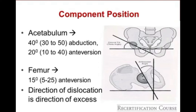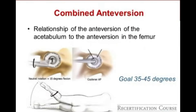The direction of dislocation is the direction of excess. If a hip dislocates out the front, that patient likely has excessive combined anteversion. Combined anteversion is an important concept — it's about the relationship between anteversion of the acetabulum and the femur. Our goal for combined anteversion is approximately 35 to 45 degrees.